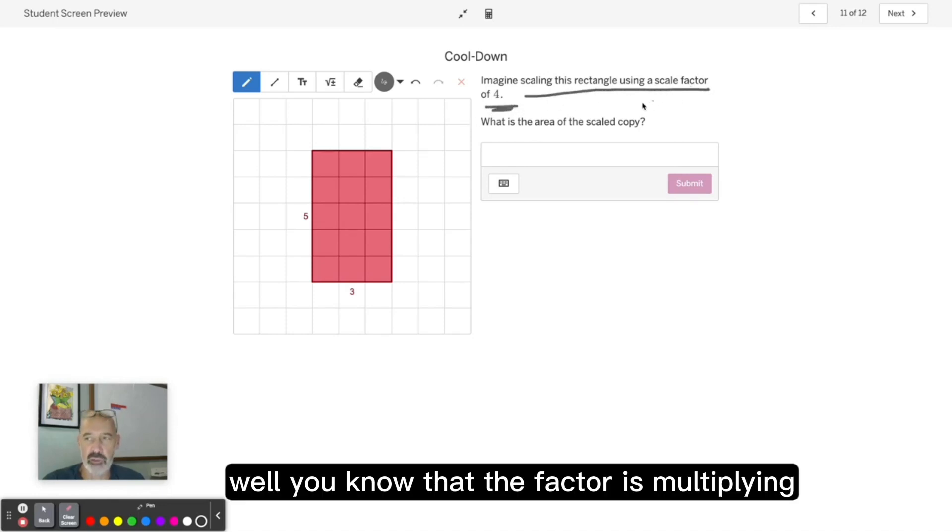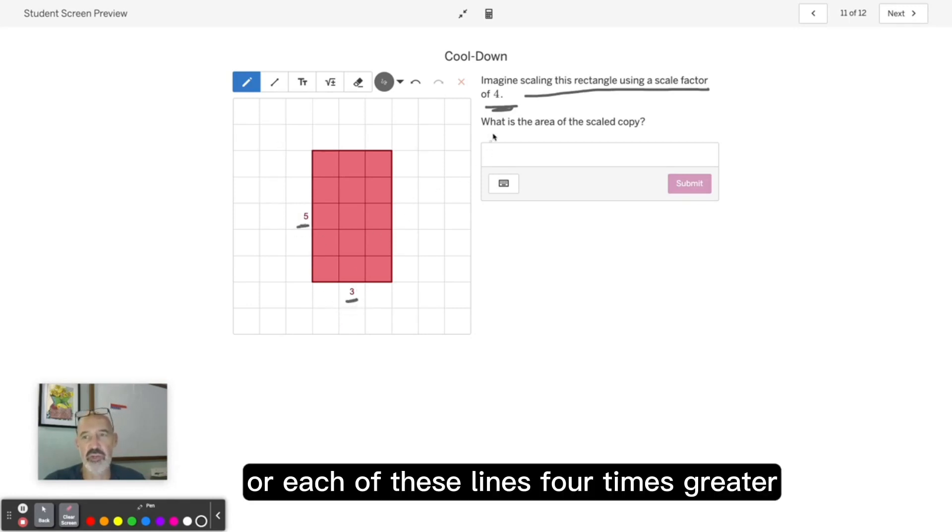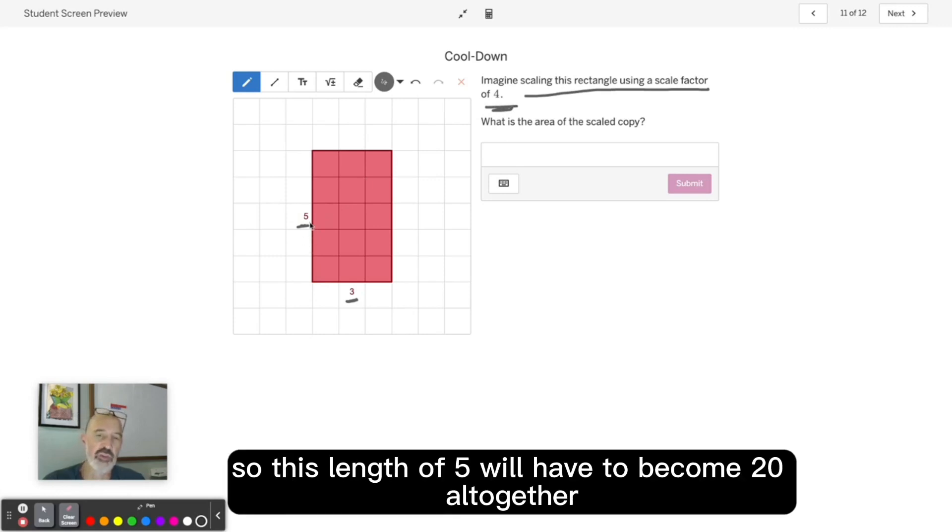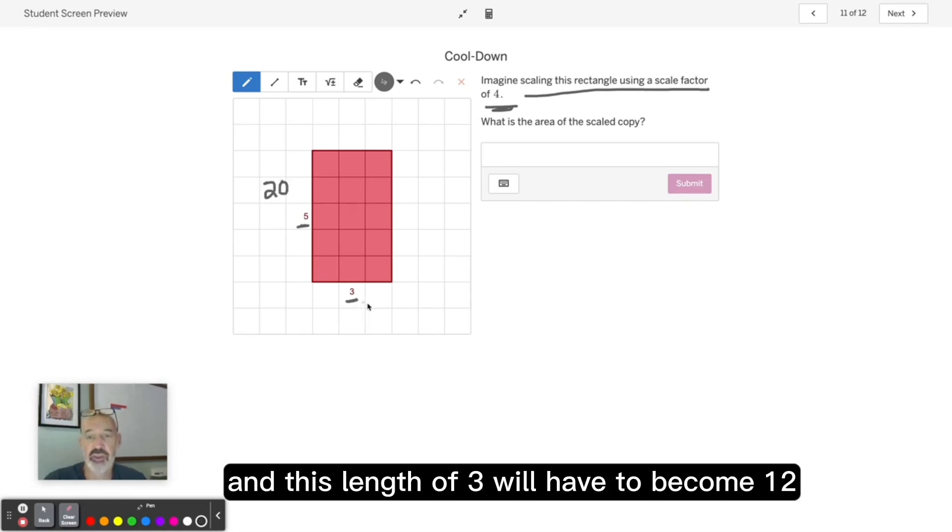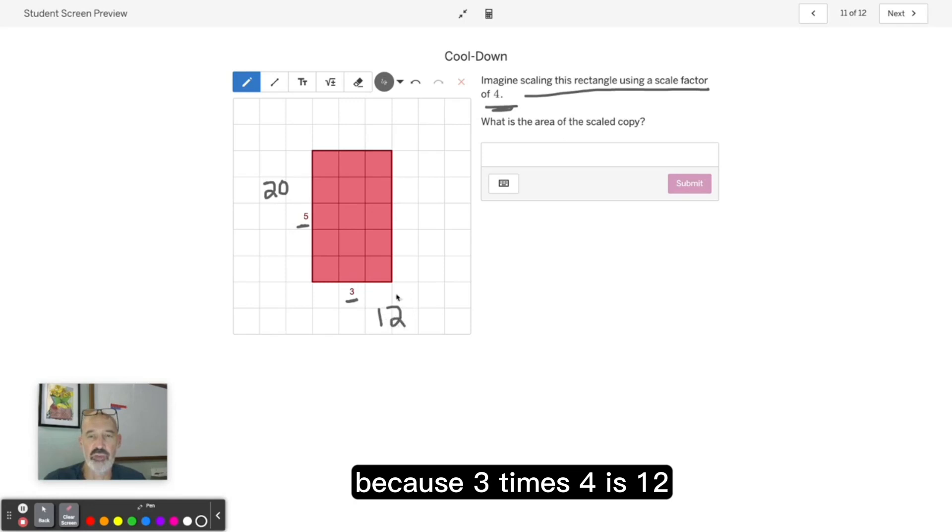You know that the factor is multiplying, so we need to make each of these lengths 4 times greater. This length of 5 will have to become 20 altogether, because 5 times 4 is 20, and this length of 3 will have to become 12, because 3 times 4 is 12.